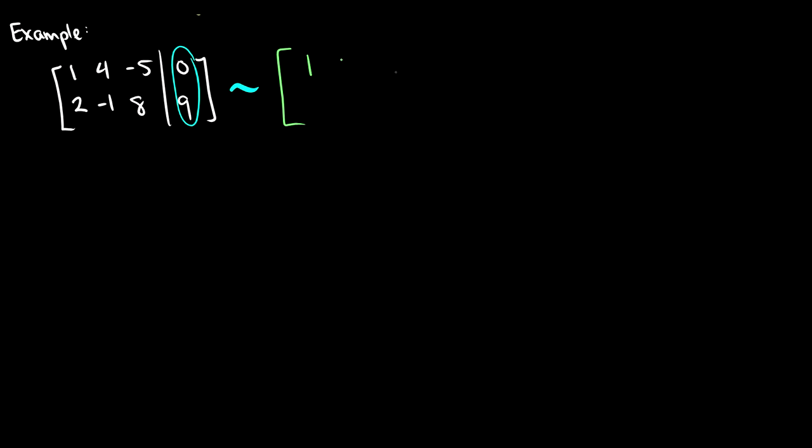So one, four, negative five, zero will be the same. Then we'll take two minus two is zero, negative one minus eight is negative nine, eight plus ten is eighteen, and nine minus zero is nine.